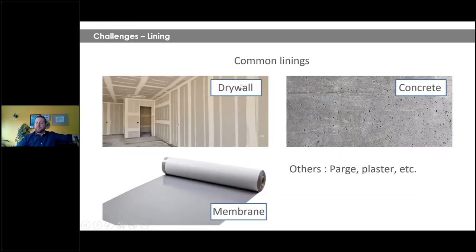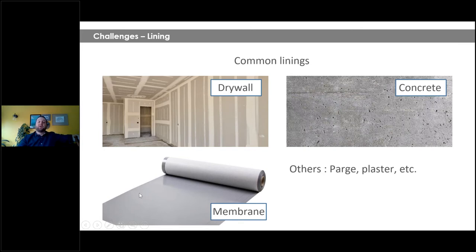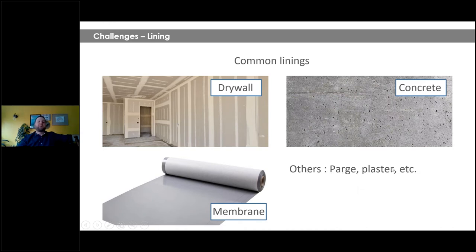Common linings: drywall, which can be installed mainly on the underside, or in European countries on the top side as well — it depends on how the load is applied. Concrete is normally used on top of systems. In recent projects, membranes have been used as very interesting solutions. Keep in mind that the products have to breathe — wood is something living, so it needs to breathe, dry, contract and move. Take that into account when selecting your lining. Others that have been tested include parge, plaster, et cetera.